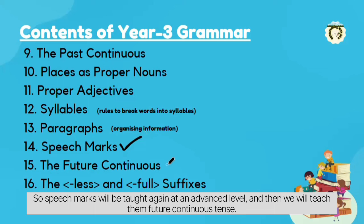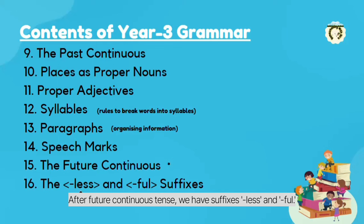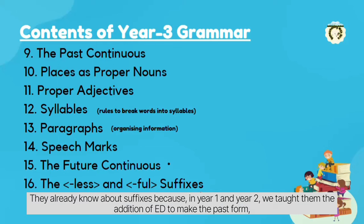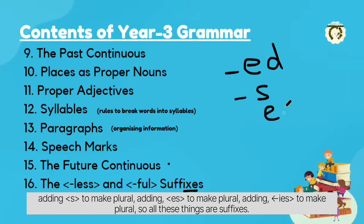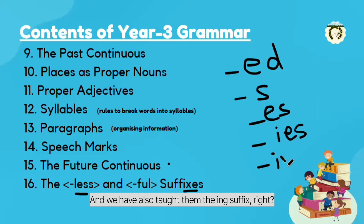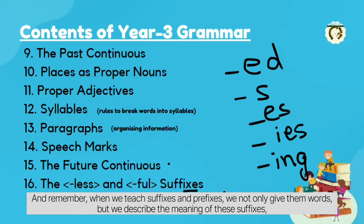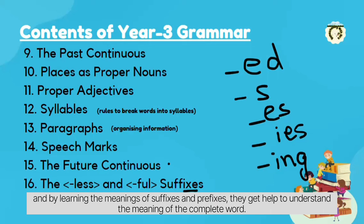Then we'll teach them future continuous tense. After that, we have the suffixes '-less' and '-ful'. Kids already know about suffixes from year 1 and year 2, where we taught adding '-ed' for past form, adding '-s' or '-es' or '-ies' for plurals, and the '-ing' suffix. Now it's time to teach the suffix '-less' and '-ful'. When we teach suffixes and prefixes, we not only give words but describe their meanings, which helps kids understand the meaning of complete words.